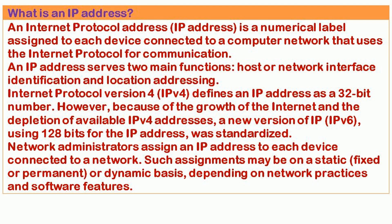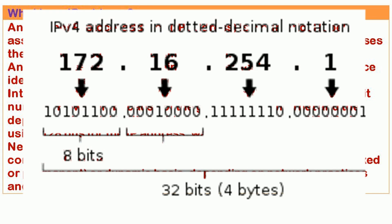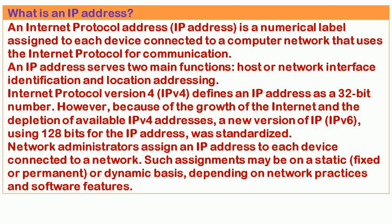What is an IP address? An Internet Protocol Address (IP Address) is a numerical label assigned to each device connected to a computer network that uses the Internet protocol for communication. An IP address serves two main functions: host or network interface identification, and location addressing. Internet Protocol Version 4 (IPv4) defines an IP address as a 32-bit number. However, because of the growth of the Internet and the depletion of available IPv4 addresses, a new version of IP, IPv6, using 128 bits for the IP address, was standardized.